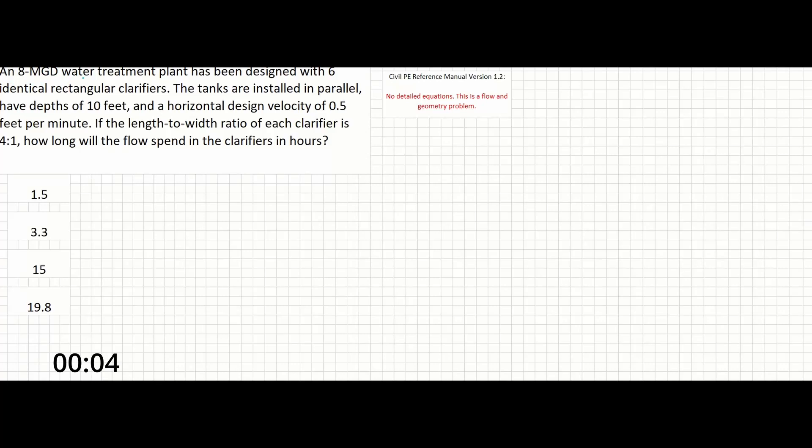An 8MGD water treatment plant has been designed with six identical rectangular clarifiers. The tanks are installed in parallel, have depths of 10 feet, and a horizontal design velocity of 0.5 feet per minute. If the length to width ratio of each clarifier is 4 to 1, how long will the flow spend in the clarifiers in hours?